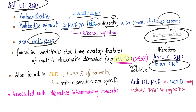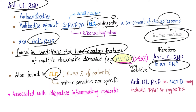We also call them anti-RNP without the U1. They are found in conditions that have overlapping features — a mixture of rheumatological symptoms — such as mixed connective tissue disease, as well as lupus, because lupus is also a mix of many different symptoms, which is why it's very difficult to diagnose, as well as idiopathic inflammatory myositis. In a patient with mixed connective tissue disease, anti-U1 RNP is associated with pulmonary arterial hypertension and myositis, which is inflammation of the muscles.